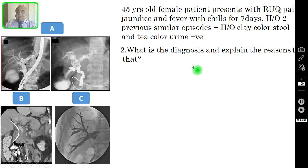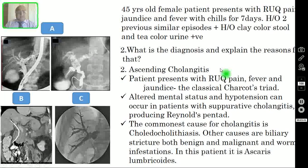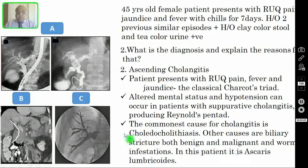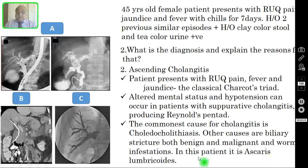Question number two: what is the diagnosis? The diagnosis is ascending cholangitis. The patient presents with right upper quadrant pain, fever, and jaundice — this is the classical Charcot's triad. Altered mental status and hypotension can occur in suppurative cholangitis, producing the classical Reynolds' pentad. The commonest cause is choledocholithiasis; other causes are biliary stricture and worm infestations like Clonorchis sinensis. In this patient, it is Ascaris lumbricoides infestation.